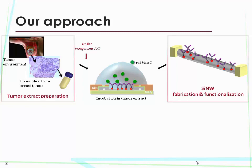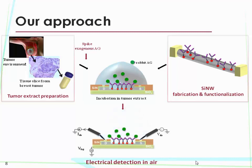First of all, we were not sure yet of the impact of the tumor extract on our sensors. So we wanted to work with an antigen that is not expressed in the human tumor tissue. In this way we can spike the antigen at a very well-known concentration inside the tumor extract and we can be sure of the specificity of our sensing. We can also compare with previous results obtained on the same antigen with another silicon nanowire technology. We then have to wash the sensor with an optimized washing protocol to remove all non-specific proteins, and then measure the conductance of the nanowire in air.